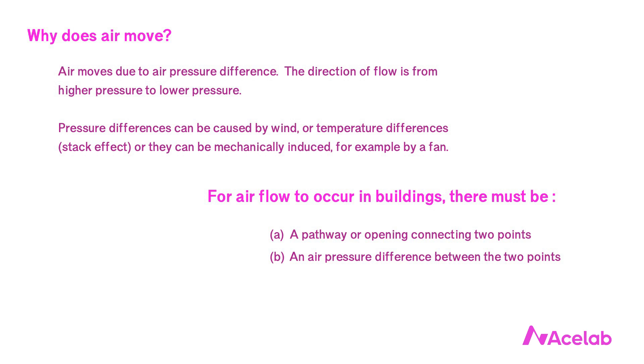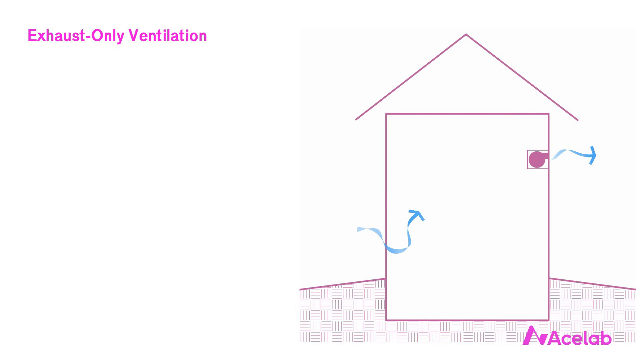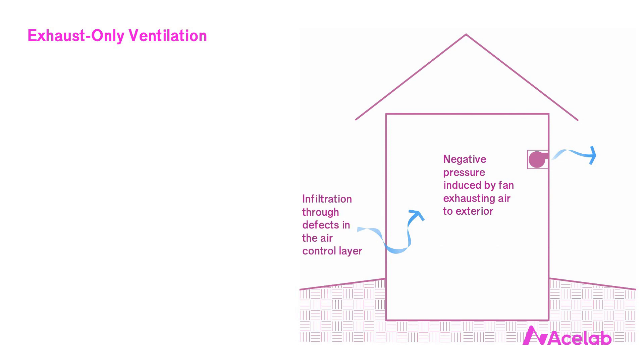This third way of causing pressure differences — mechanically induced — is the focus of this discussion and what all the controversy is about. For a long time we didn't do anything deliberate to bring exterior fresh air into our houses; air got inside simply from occupants opening windows or doors, or from whatever came through defects in the enclosure from wind and temperature differences. Now we introduce fresh air with some kind of ventilation system. The most common approach is called exhaust-only ventilation, which works by using a fan to exhaust air from a space, causing the space to become negatively pressurized, which in turn causes infiltration through defects in the air control layer to compensate — so air out equals air in.